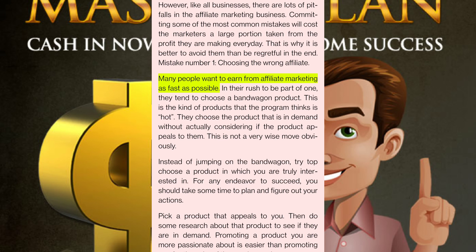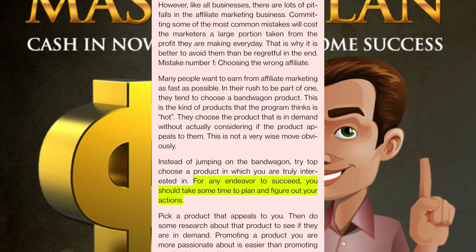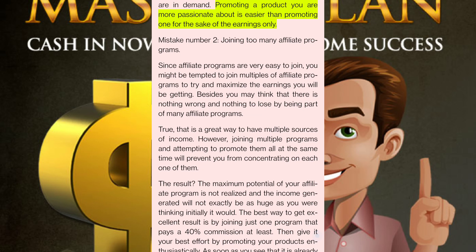Mistake number one: choosing the wrong affiliate. Many people want to earn from affiliate marketing as fast as possible. In their rush to be part of one, they tend to choose a bandwagon product — the kind of product that the program thinks is hot. They choose the product that is in demand without actually considering if the product appeals to them. This is not a very wise move. Instead of jumping on the bandwagon, try to choose a product in which you are truly interested. Pick a product that appeals to you, then do some research about that product to see if they are in demand. Promoting a product you are more passionate about is easier than promoting one for the sake of earnings only.